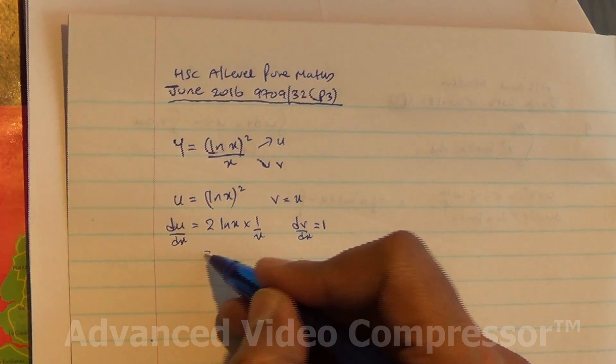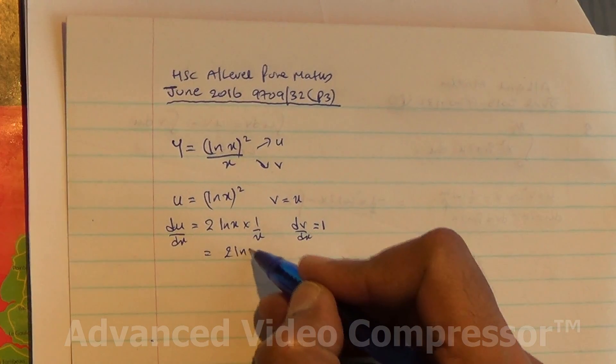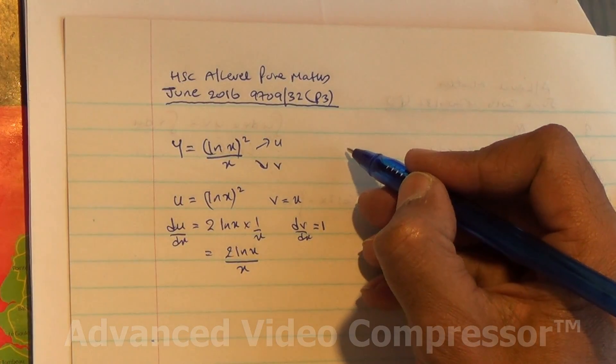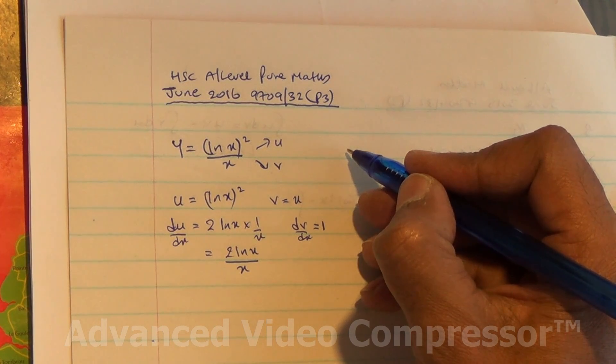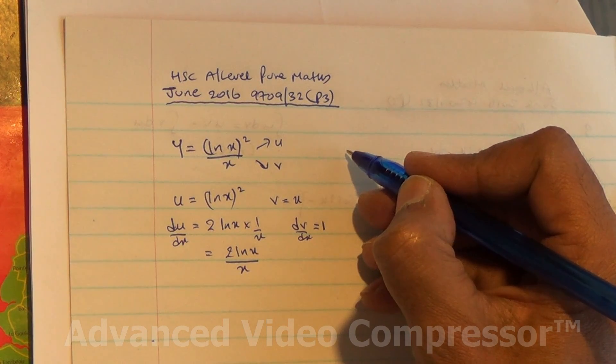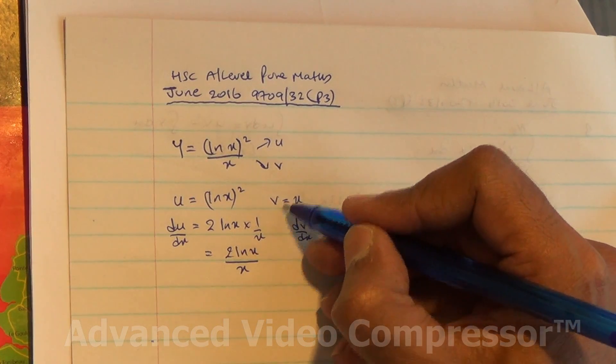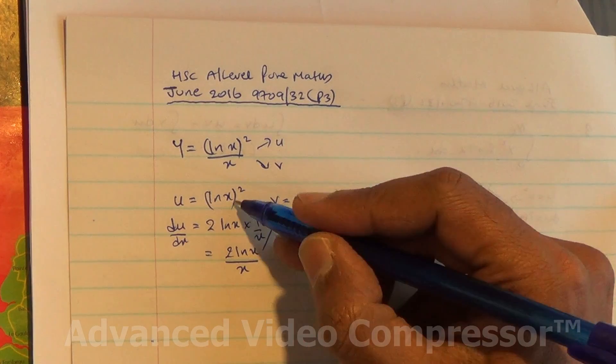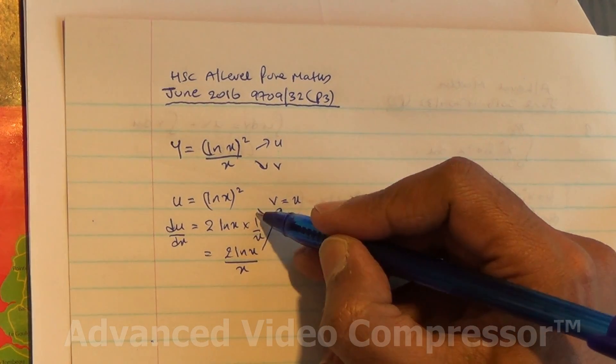So we're going to do the quotient rule: v du/dx minus u dv/dx over v². So v du/dx minus u dv/dx over v².